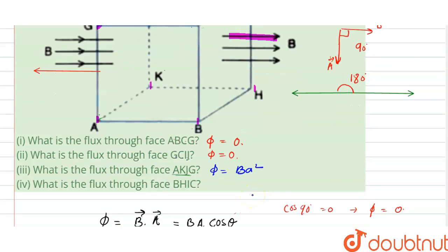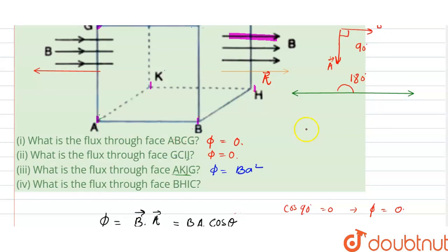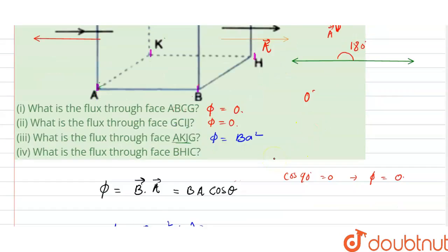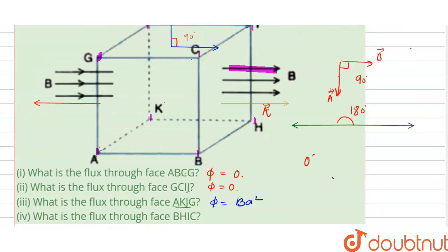Now for this one, flux through BHIC. For BHIC we can easily see that both the magnetic field direction and area vector direction are same. These are at an angle of 0 degrees and we know that cos 0 equals 1. So from here if you put this value, our phi is coming like B into a square in this positive i-cap direction.